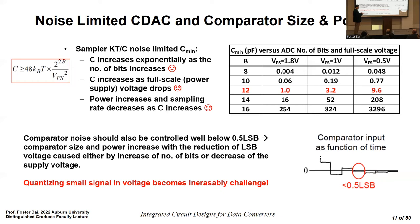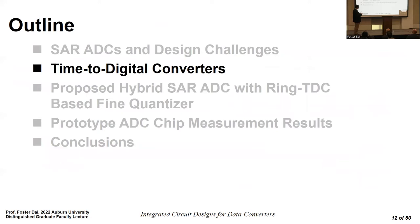We also need to ensure the comparator noise is much less than half an LSB. This forces us to use larger transistors for the comparator, because the 1/f noise of a transistor is proportional to its size. We simply cannot enjoy the small feature sizes that technology scaling provides for further signal processing in the voltage domain.